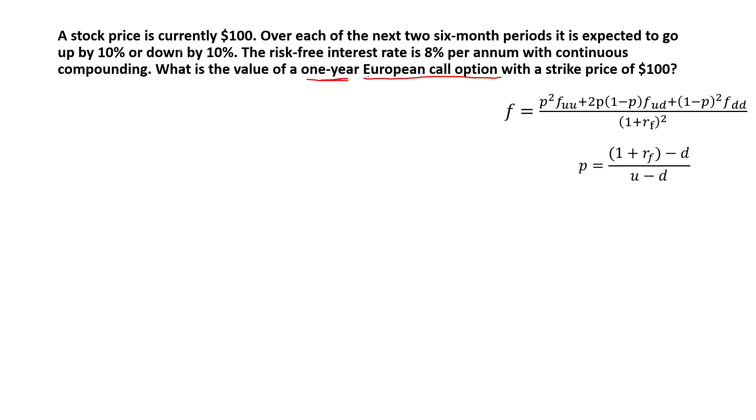The stock price is currently $100. So we start with the $100, and then we go up once. Now, in order to calculate what the share prices are going to be at this stage, we need U and D.